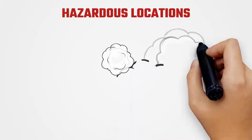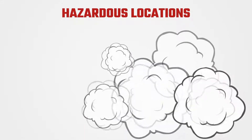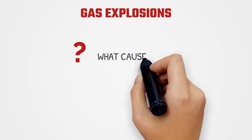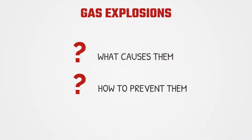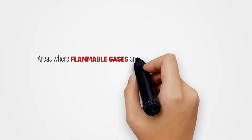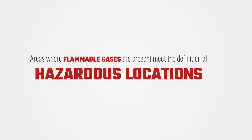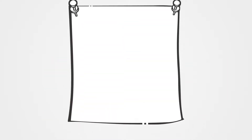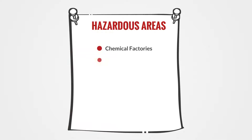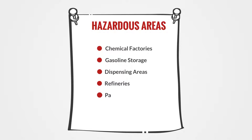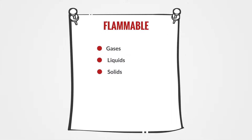Hazardous locations. We are all aware of the destruction that can be caused by gas explosions, so we need to understand what causes them and how to prevent them. Areas where flammable gases are present meet the definition of hazardous locations. Examples of hazardous areas are chemical factories, gasoline storage and dispensing areas, refineries, paint workshops, tank facilities, and loading areas for flammable gases, liquids, and solids.